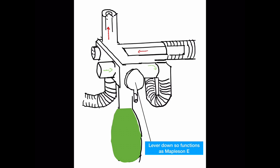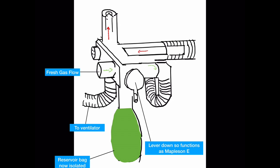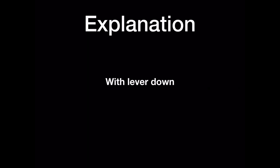With the lever in the down position, the ventilator is included in the system and the reservoir bag and the APL valve are isolated from the circuit. It now resembles a Mapleson E system. The fresh gas flow is supplied via the inspiratory tubing and expired gases are removed via the expiratory tubing. In this lever position, the system maintains the benefit of efficiency.